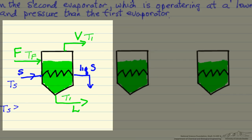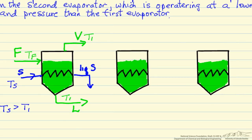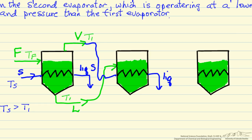TS must be greater than the evaporator temperature T1 for evaporation to occur. The liquid leaving the first evaporator is fed into the second evaporator, where we create evaporation by using the vapor from the first evaporator fed into the heating coils. Again we get liquid at saturation conditions leaving, along with vapor V2 and a more concentrated liquid from the second effect.